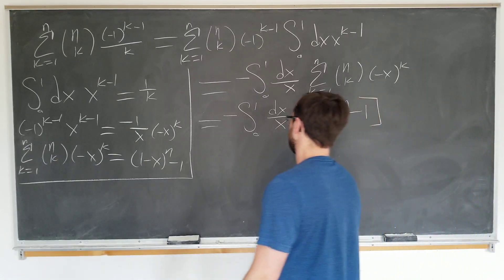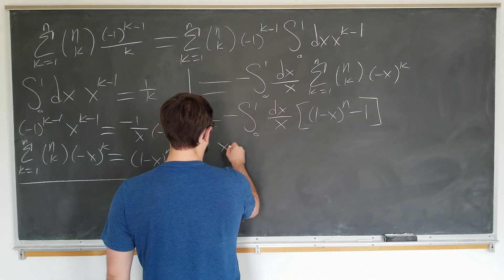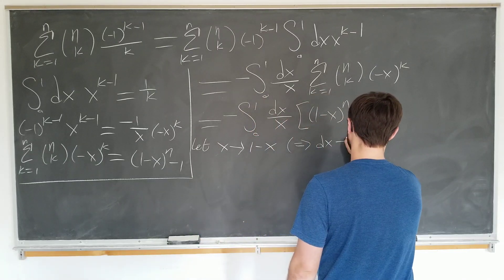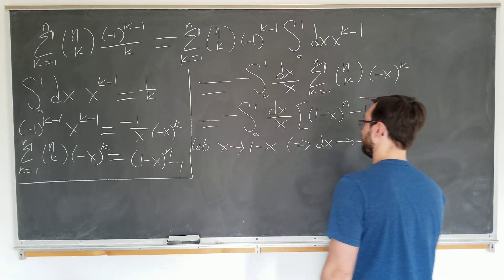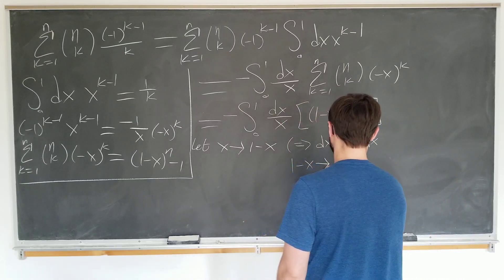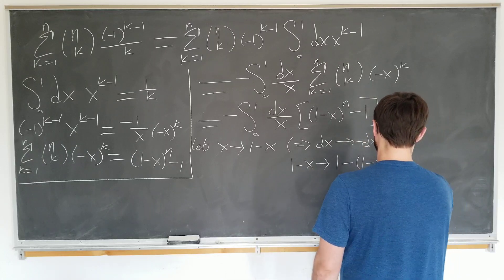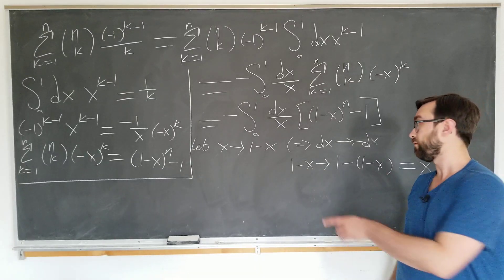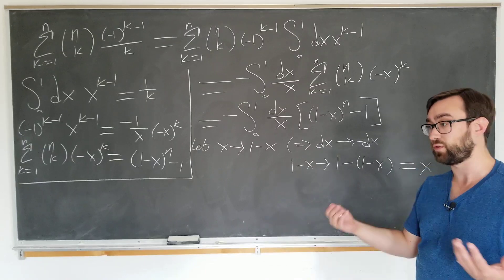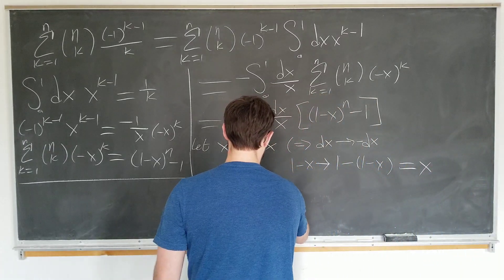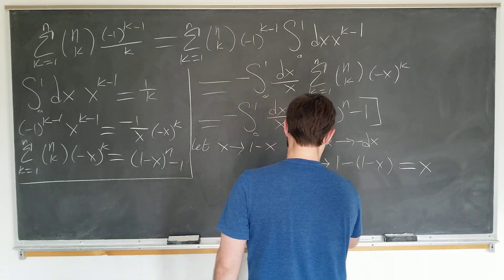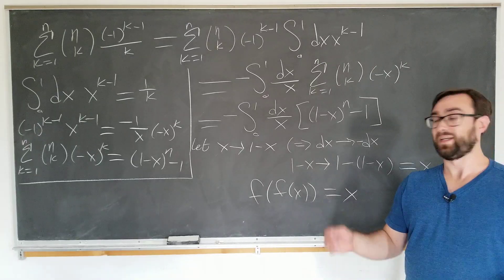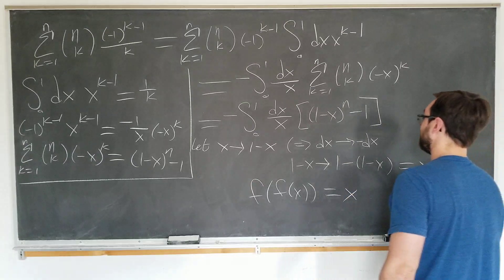Let us now make a substitution. Let x go to one minus x which of course tells us that dx goes to minus dx and we also have that one minus x goes to one minus one minus x which is actually equal to x. This is an important property of the function one minus x, is actually self-involutional. It satisfies the differential equation f of f of x is equal to x. It's not an idempotent but it satisfies this. I forgot what it's called. Let's move on. Okay so one minus x goes to x and of course we have x itself goes from one to zero.